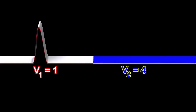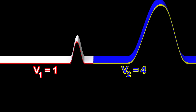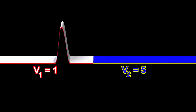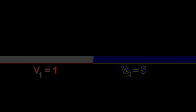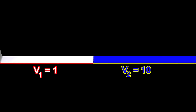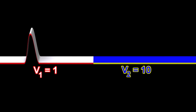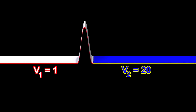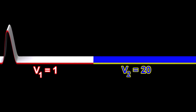As we keep increasing V2, the amplitudes of the reflected and transmitted waves keep increasing, but the effects get less and less noticeable. As V2 keeps increasing, the amplitude of the reflected wave gets closer and closer to the amplitude of the initial wave, but never exceeds it.